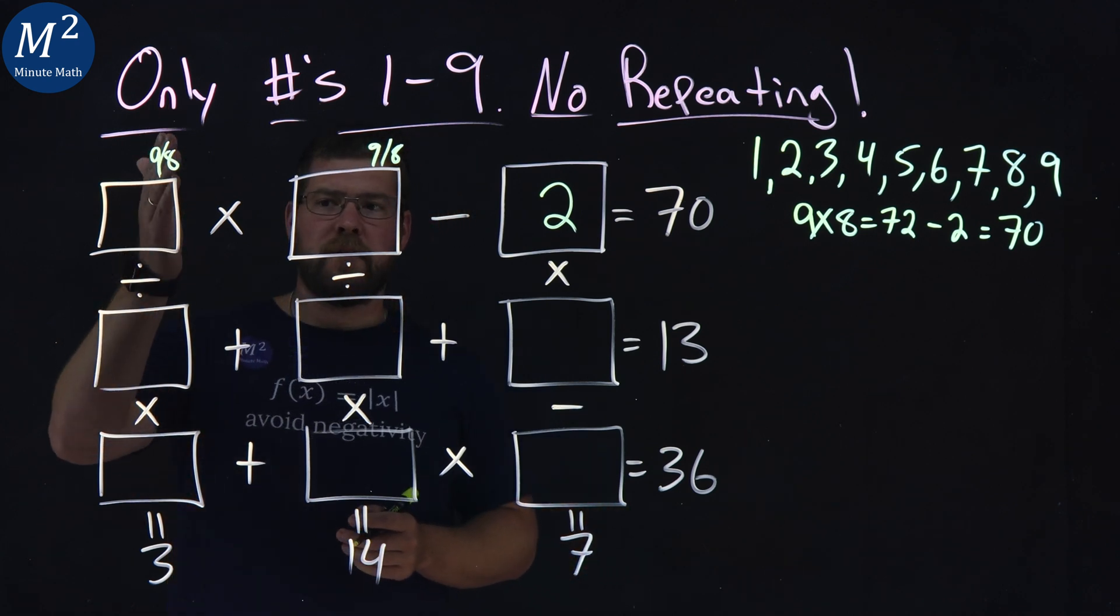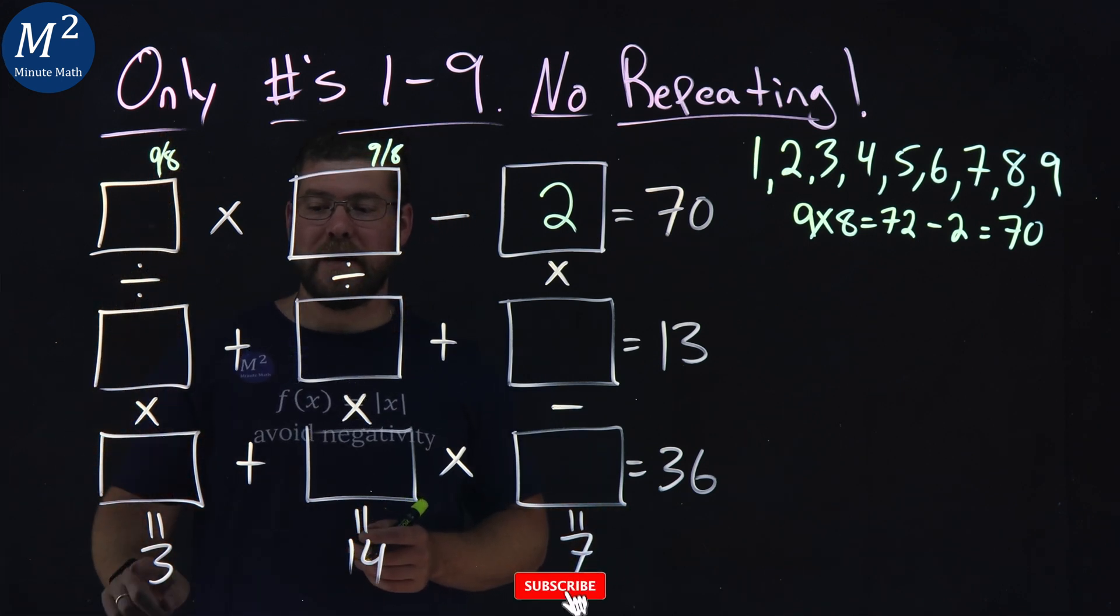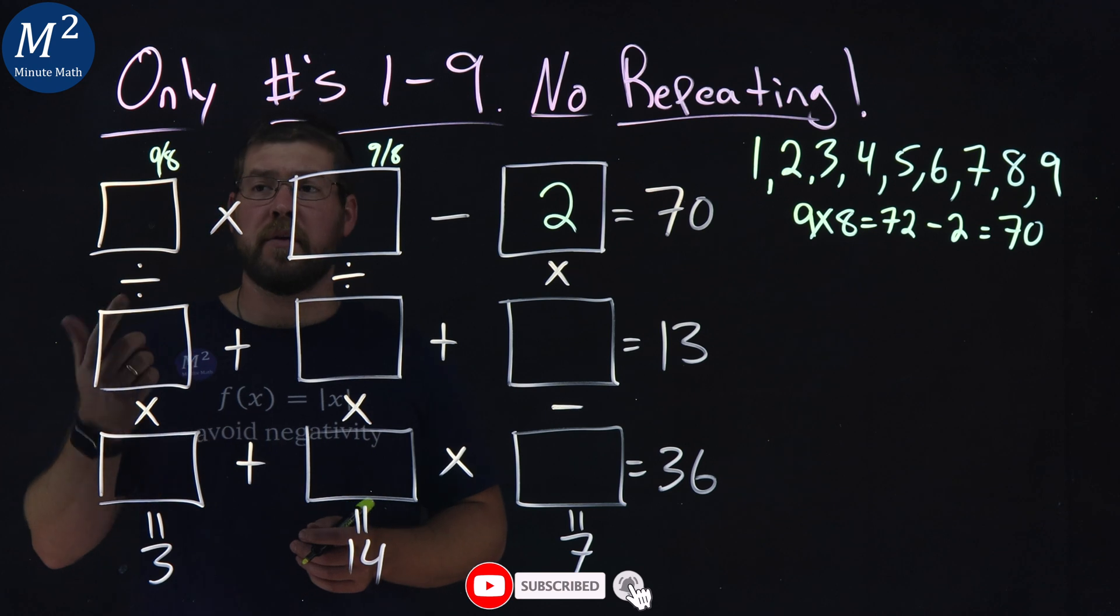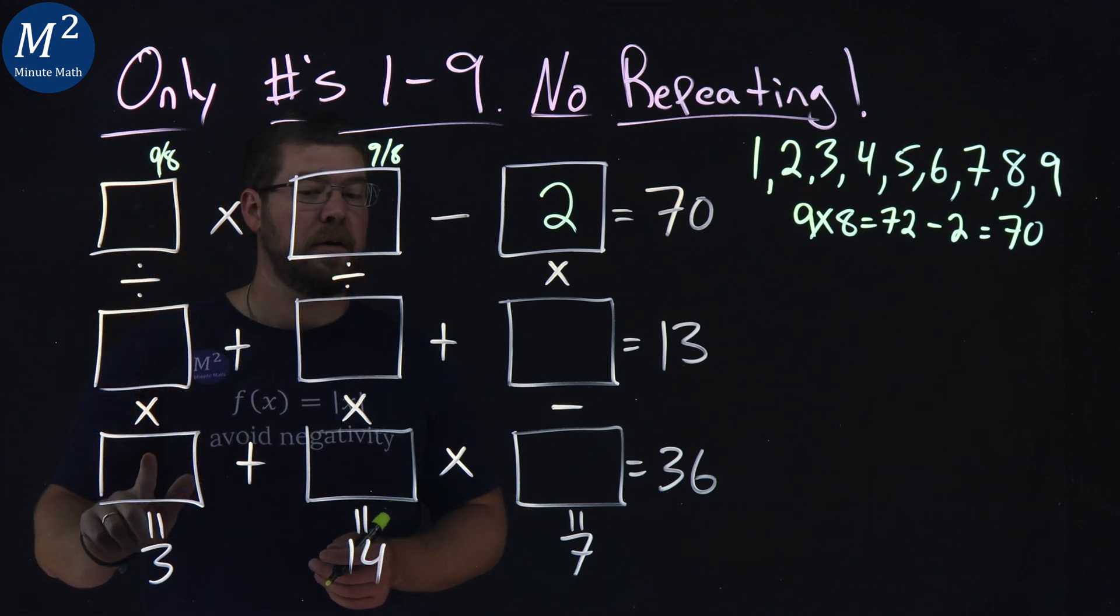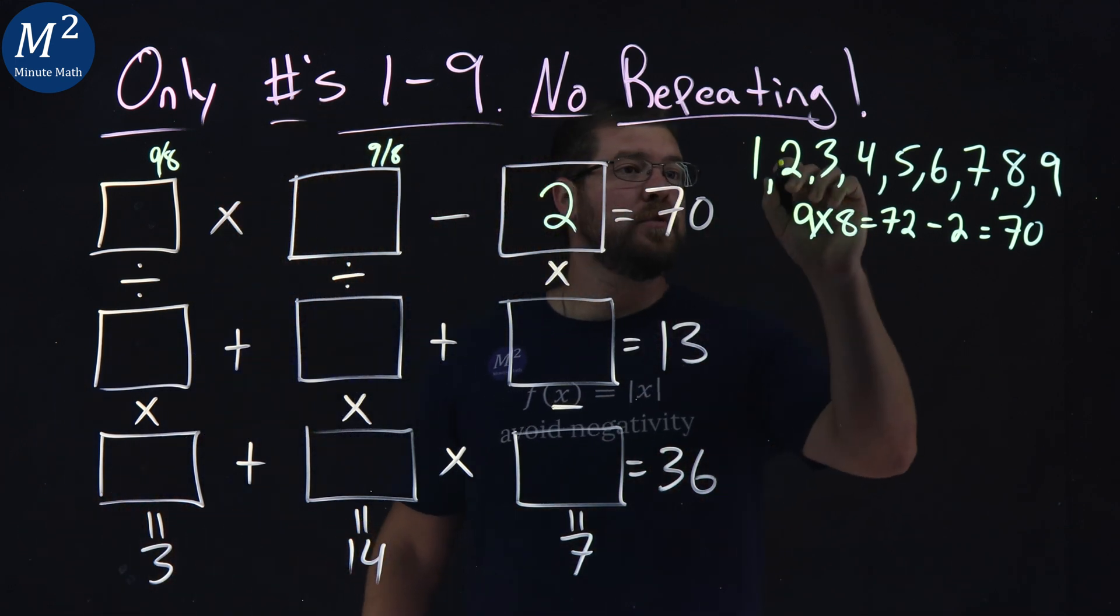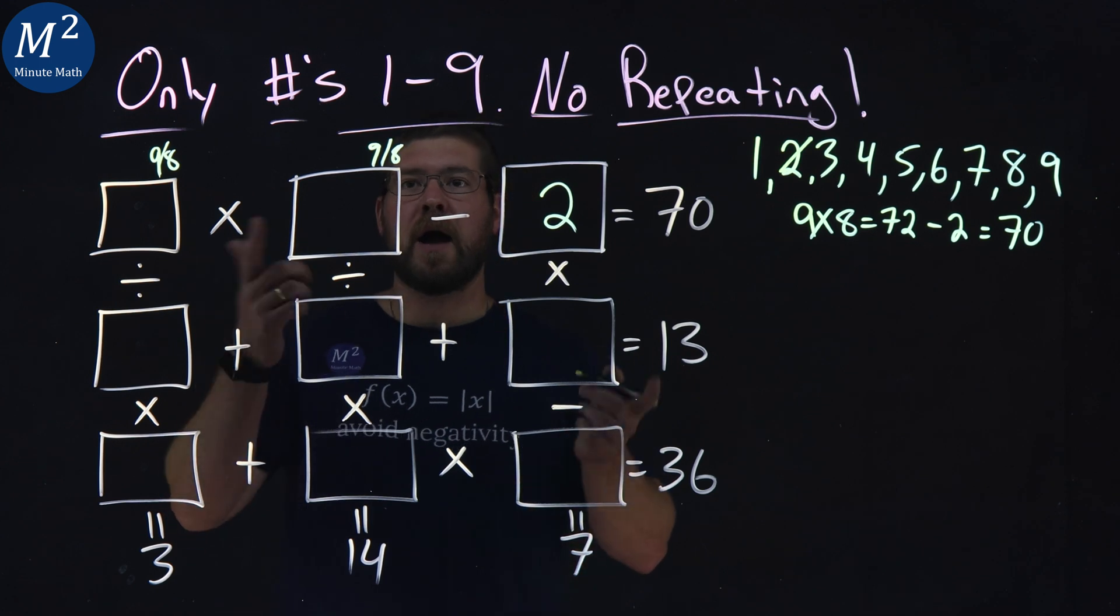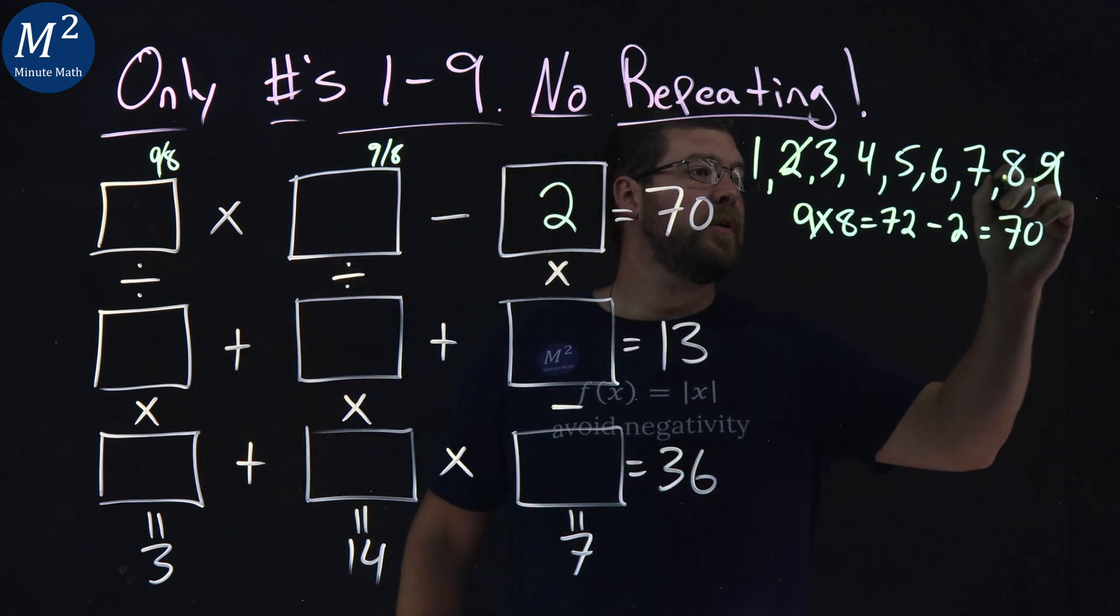All right, let's go down our first column here. We want to get to a three, so let's start with the nine. We have nine divided by a number, can we figure that out, times another number gives me a three. And actually, we know two is gone, and we know nine or eights are gone here, too, we just don't know which one they're in.